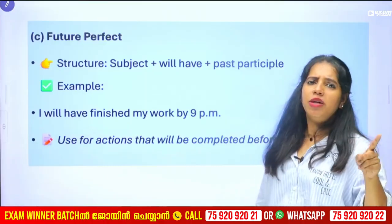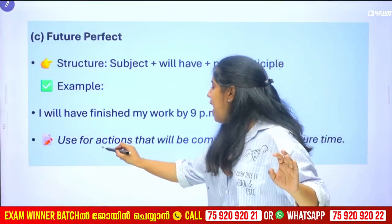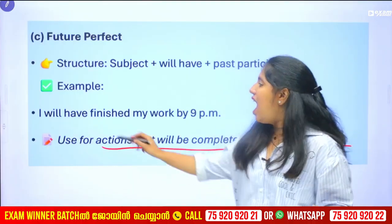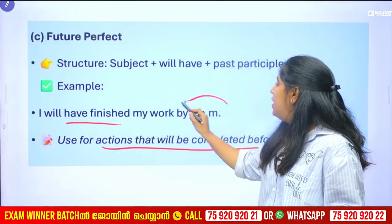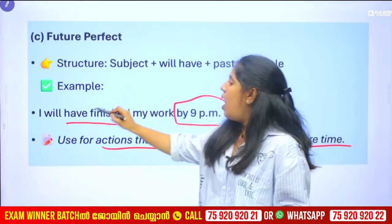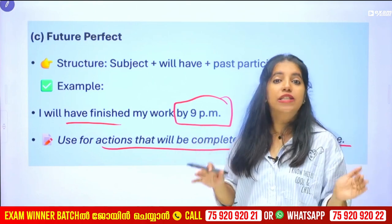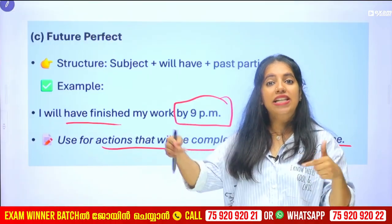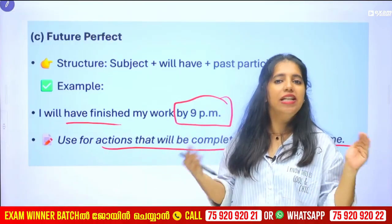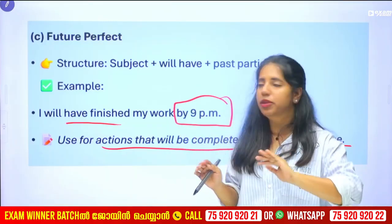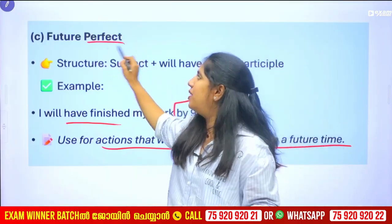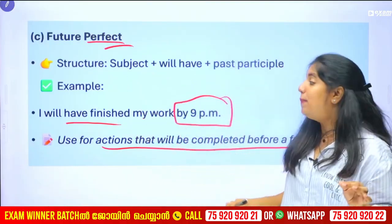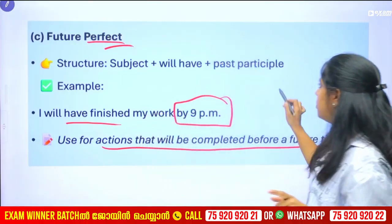Future perfect — completed actions before a future time. Actions that will be completed before a specific future point. For example, I will have finished my homework by 9 pm. The structure is 'will' plus 'have' plus past participle.